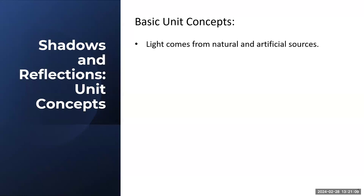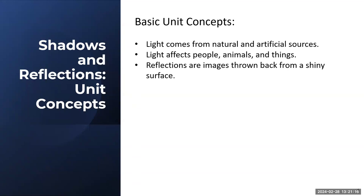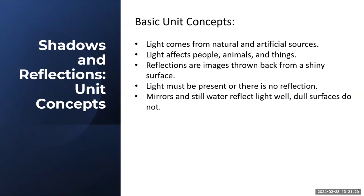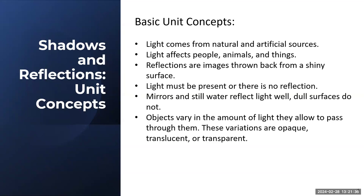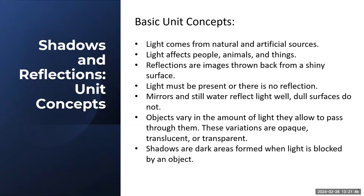The unit concepts of Shadows and Reflections include: light comes from natural and artificial sources; light affects people, animals, and things; reflections are images thrown back from a shiny surface; light must be present or there will be no reflection; mirrors and still water reflect light well, while dull surfaces do not; objects vary in the amount of light they allow to pass through them — opaque, translucent, and transparent; and shadows are dark areas formed when light is blocked by an object.